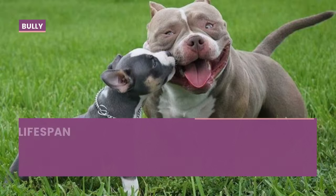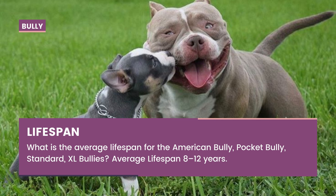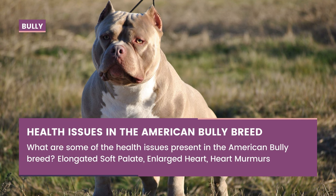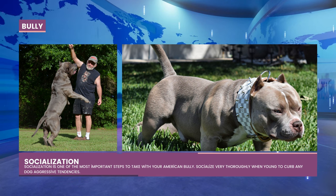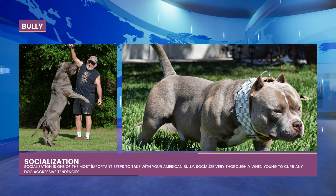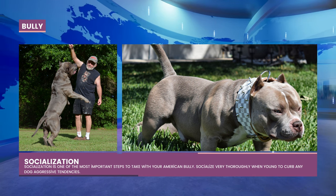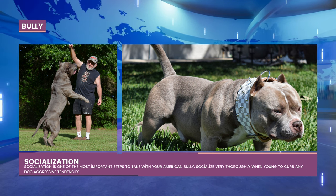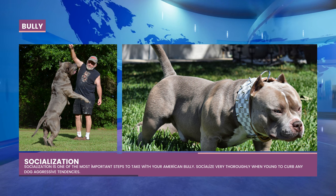The typical lifespan for American Bully breeds — pocket, standard, and XL — is 8 to 12 years. Health concerns the American Bully breed is prone to include extended soft palate, heart enlargement, and heart palpitations. Socialization is one of the most crucial things you can do for your American Bully; thoroughly socializing them when young helps prevent any dog-aggressive tendencies. The breed has proven to be an excellent property guardian and highly regarded as a wonderful companion dog.